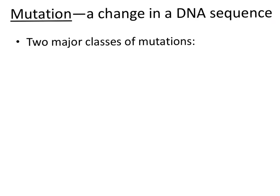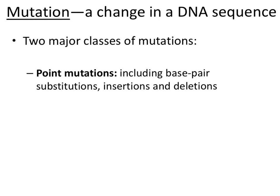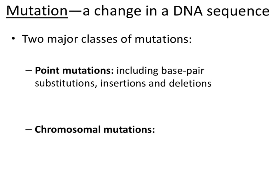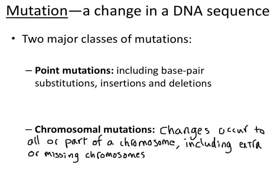There are two major classes of mutations. Point mutations are going to be the focus of this video lecture. That includes two things: one called a base pair substitution, where one nucleotide is changed to another, and then there are insertions and deletions, in which letters are added or removed. These are known as point mutations because they happen at a single point or a single nucleotide along the DNA sequence. In contrast, chromosomal mutations involve entire chunks of a chromosome going missing, or even an entire chromosome going missing, or sometimes an extra chromosome. We'll talk about chromosomal mutations at another time.